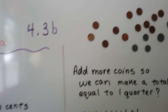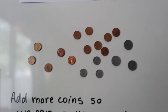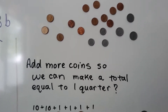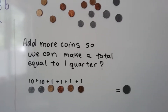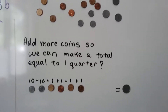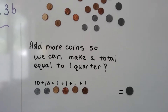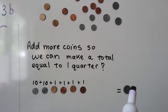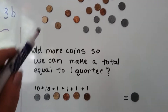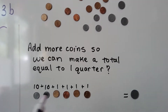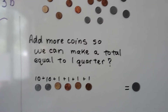So I have a lot of coins right here — see all these? I have pennies and nickels and dimes. We're going to add more coins so we can make a total equal to one quarter. So I have two dimes and I have four pennies. We want to make it equal to one quarter. So what do I need to grab from here to make that equal to a quarter, which is 25 cents?